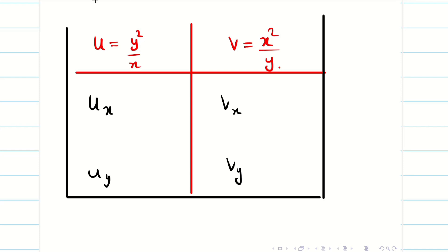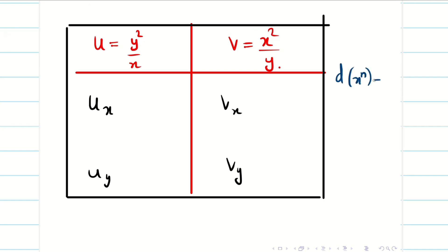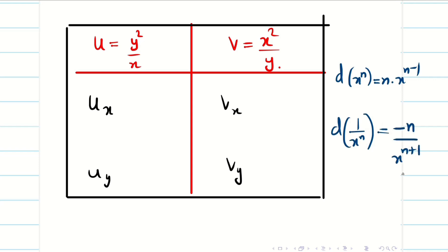Let me write the formulas as a quick recap. Differentiation of xⁿ is n·xⁿ⁻¹. If xⁿ is in the denominator, differentiation of 1/xⁿ is −n/xⁿ⁺¹. So for the numerator we have plus n and subtract 1 from the power; for the denominator we have minus n and add 1 to the power.